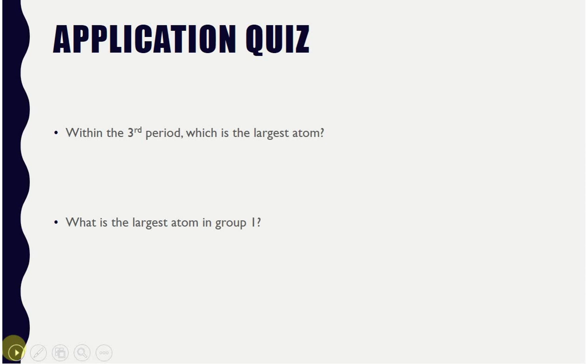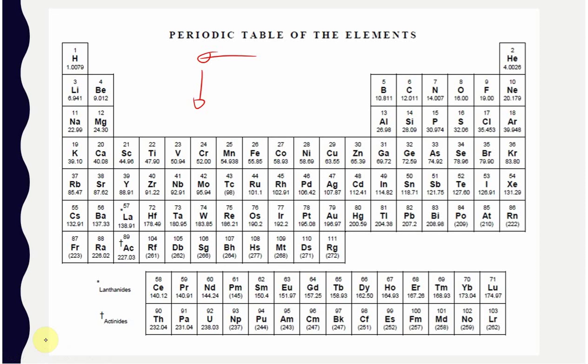So, within the third period, which has got the largest atom? Now, on the exam, what I would do is I would say given sodium, magnesium, aluminum, sulfur, chlorine, and argon, which has the largest atomic radius. Because we would look for things on the left, sodium has the biggest atomic radius.